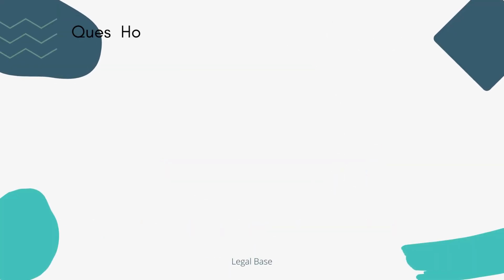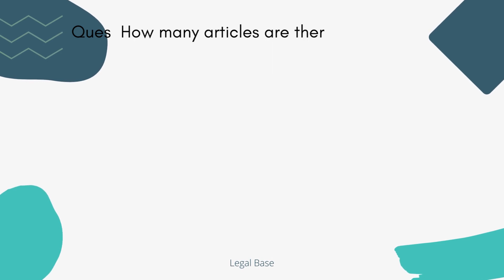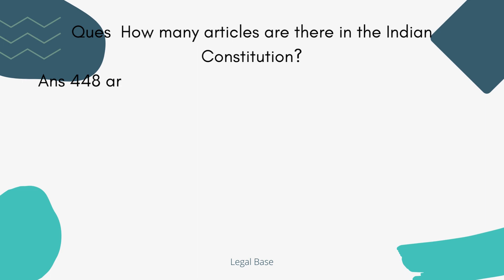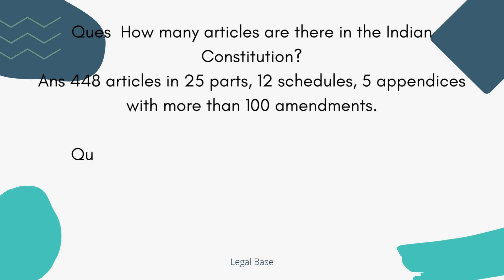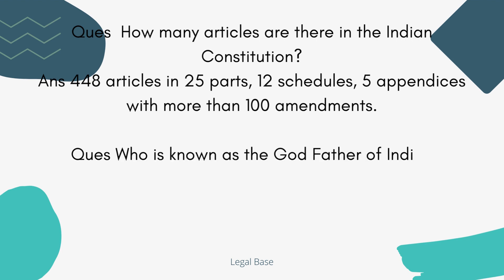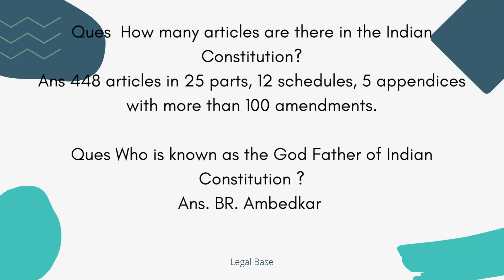A few simple questions can be asked which we think are not that important — like, in our Indian Constitution, how many articles are there? You should know how many articles there are, how many parts, and how many schedules. There are 448 articles, 12 parts, and 12 schedules. And when it comes to amendments — how many times has the Indian Constitution been amended — it is 100 plus times, and we don't know when the next amendment can come.